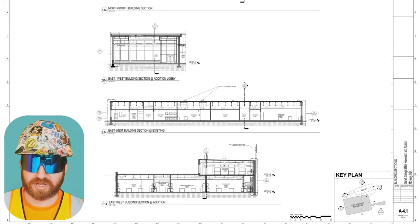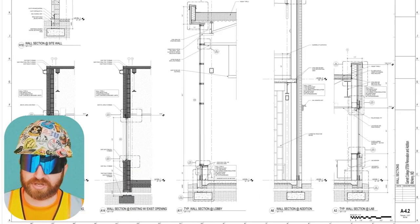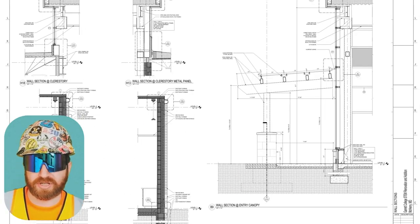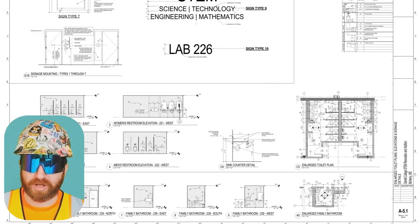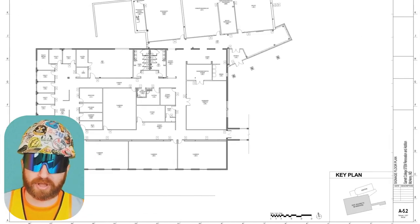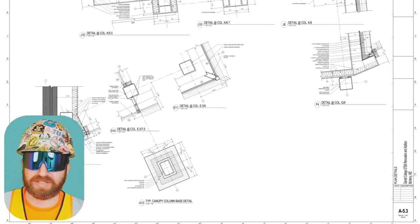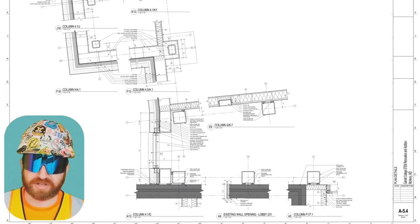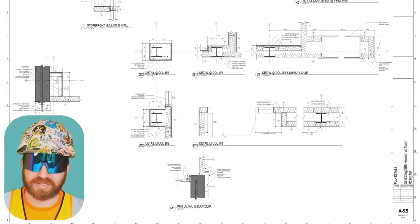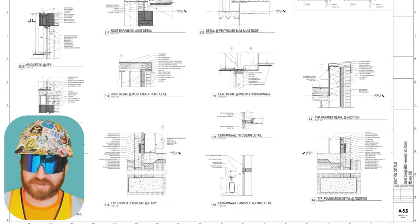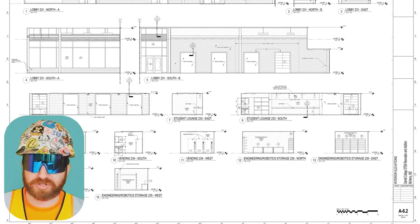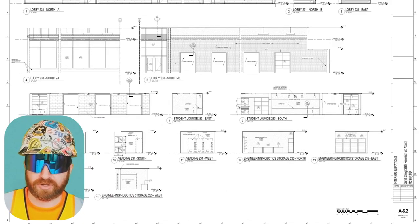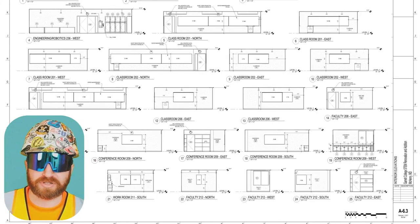A3.3 wall types. A3.4 storefront types. A3.5 curtain wall types. A4.1 building sections. A4.2 wall sections. A4.3 wall sections continued. A4.4 wall sections continued. A5.1 enlarged toilet plans, elevations and signage details. A5.2 signage floor plan. A5.3 plan details. A5.4 plan details continued. A5.5 plan details continued. A5.6 section details. A6.1 interior elevations. A6.2 interior elevations continued. A6.3 interior elevations continued.